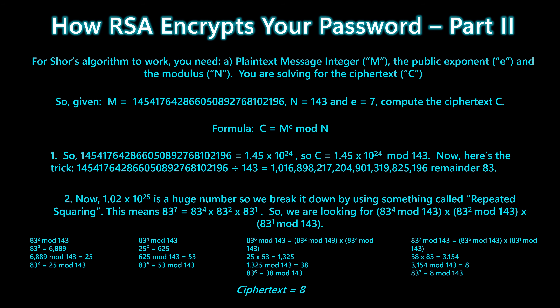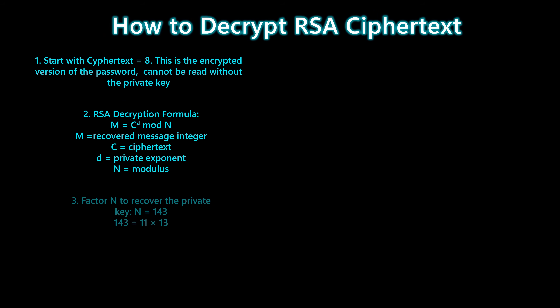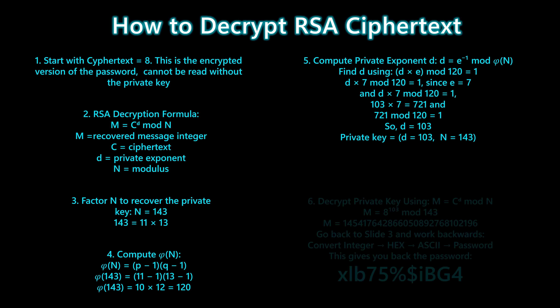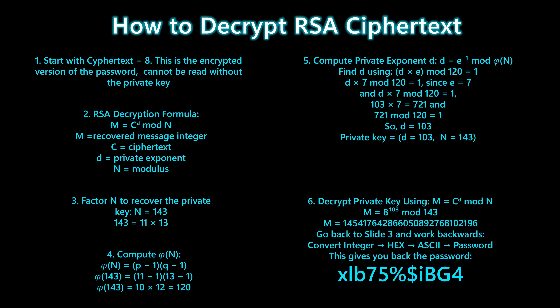Now we apply Shor's algorithm to factor n and make this entire process collapse. Step 1: our ciphertext is 8 — the encrypted version of the password; on its own it's completely meaningless. Step 2: RSA decryption uses the formula m equals c to the power of d mod n, but to compute d, the private key, we need to factor n. Step 3: n is 143. When we factor it, we get 11 times 13. That single step is what breaks RSA.